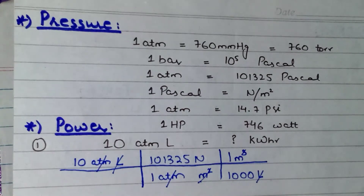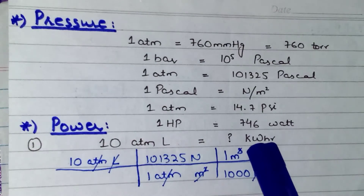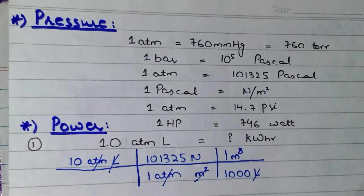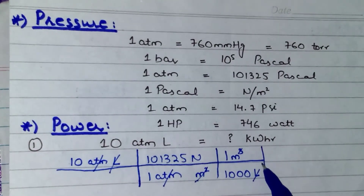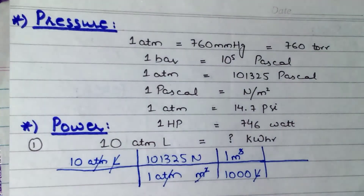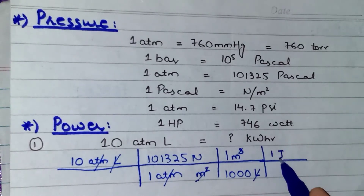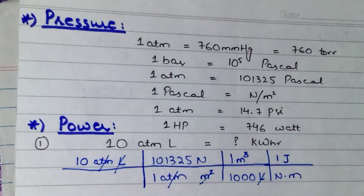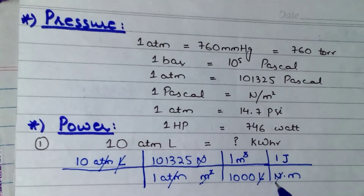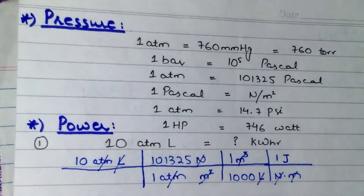Now the remaining units I have to cancel are Newton and meter. For getting kilowatt hour, I have to use the units of energy. We remember from energy conversions that 1 joule equals to 1 Newton meter — 1 joule is the product of Newton times meter. So to cancel out this Newton, I write 1 joule equals to Newton meter. This will cancel out the Newton and also cancel the remaining meter. So now I have the joule, which is the unit of energy.